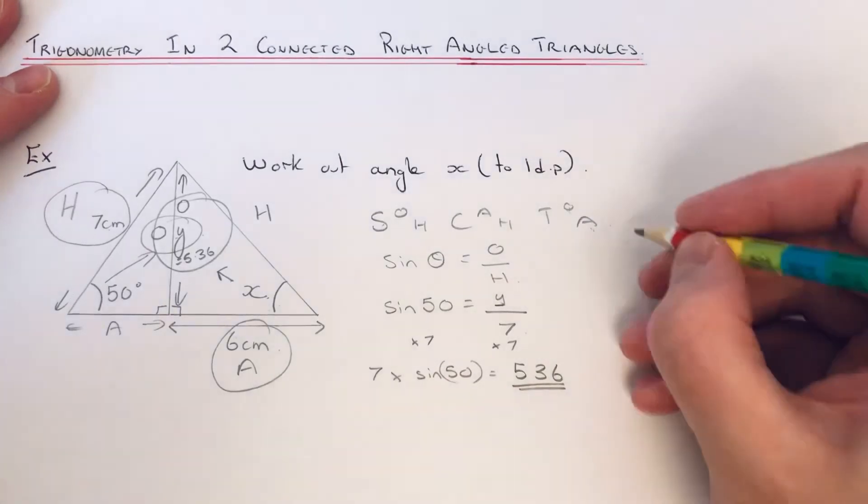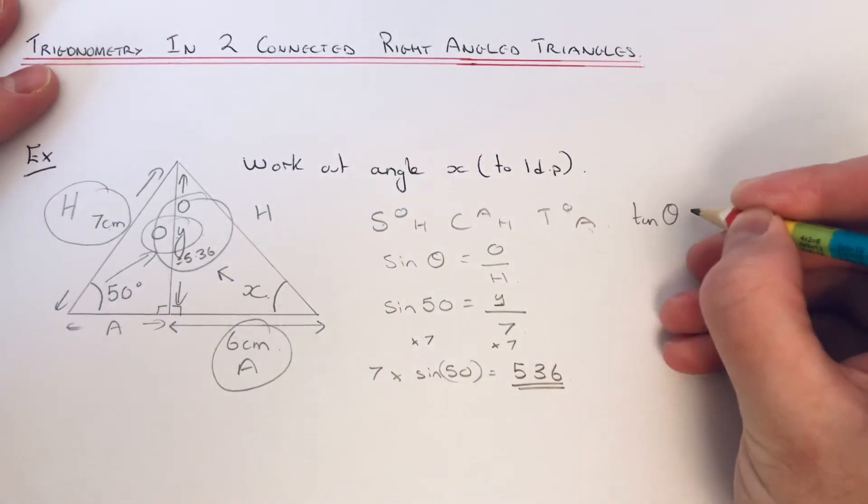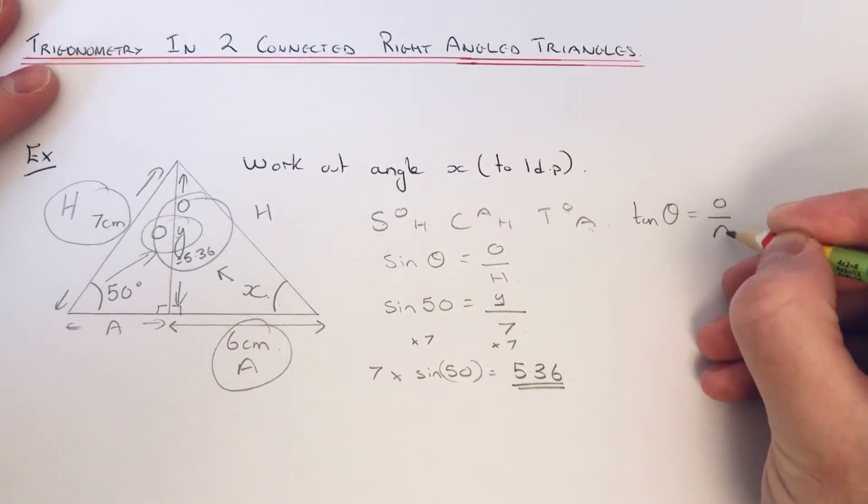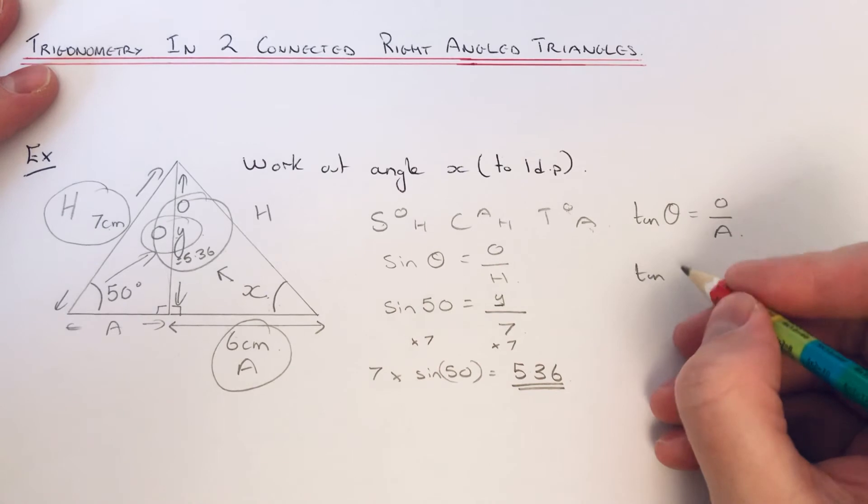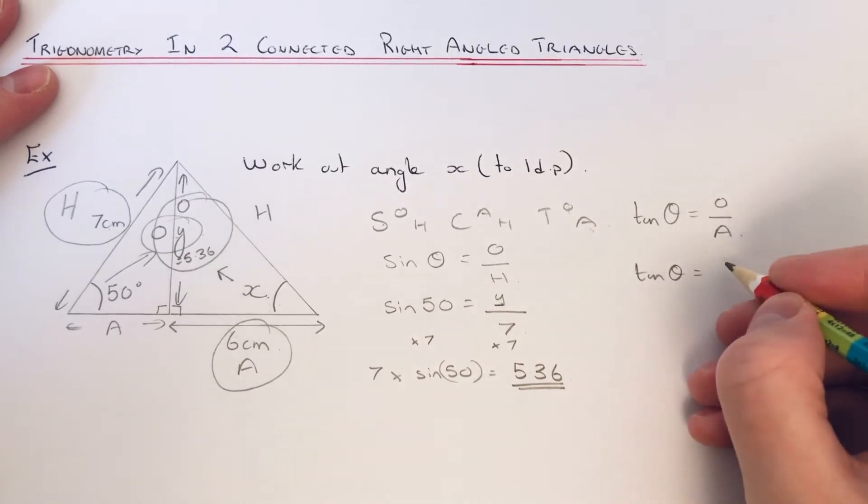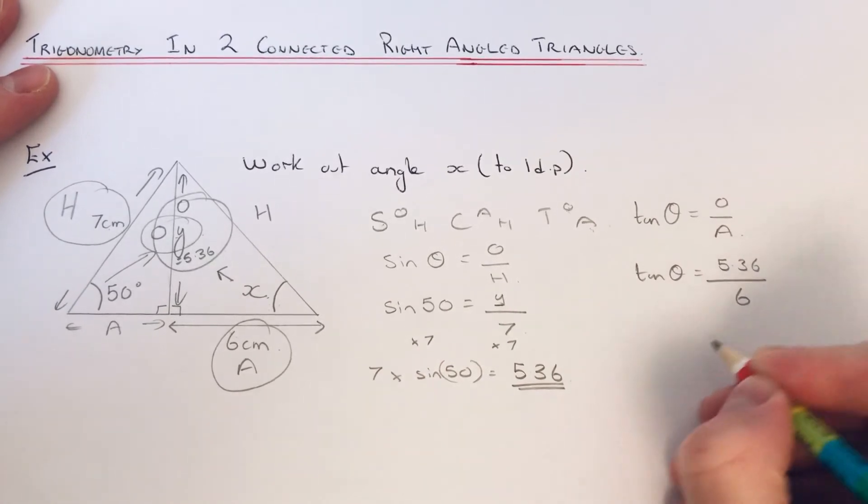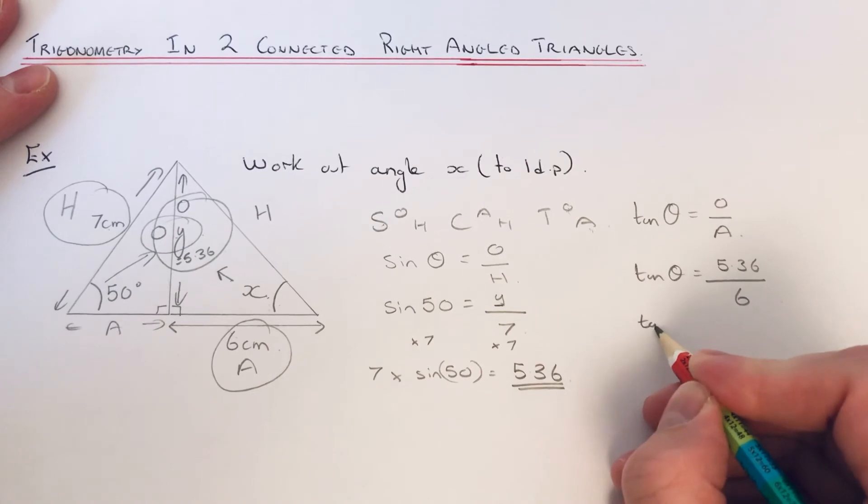So it's tan theta equals—the opposite is 5.36 over 6. To get our angle, we need to do the opposite to tan, which is tan inverse, tan minus 1.